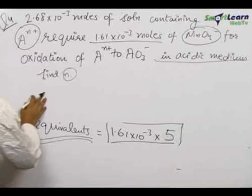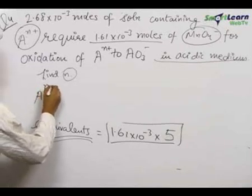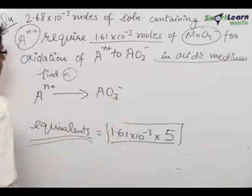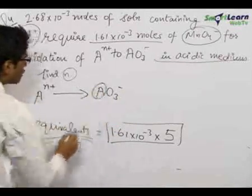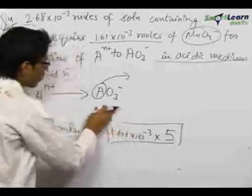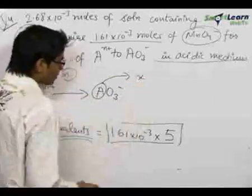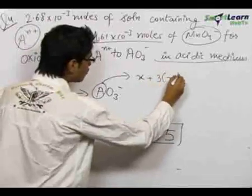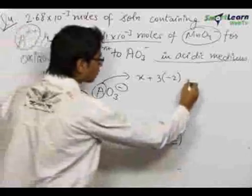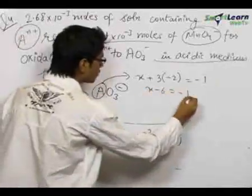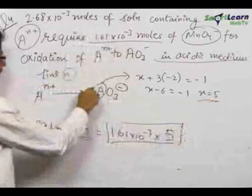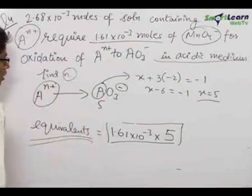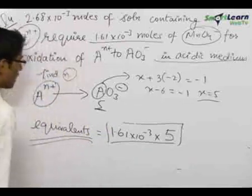Now we write down the equation for Aⁿ⁺. This Aⁿ⁺ is getting oxidized to AO₃⁻. The oxidation state of A: let us consider the oxidation state of A to be X. So, X plus 3 × (−2) equals the net charge on the whole ion, which is −1. So, X − 6 = −1, giving X = 5. So, the oxidation state of A in AO₃⁻ is +5. MnO₄⁻ is oxidizing Aⁿ⁺ into AO₃⁻, which has the oxidation state of A as +5.